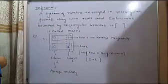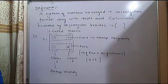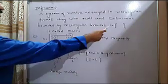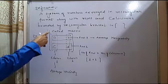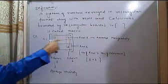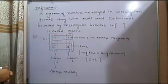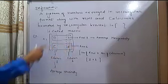Now we see the definition of matrices. A system of numbers arranged in rectangular format along rows and columns, bounded by a rectangular bracket, is called a matrix. Here we see this is a rectangular bracket. This horizontally arranged element — we say it is a row. This is row 1, and this is row 2.